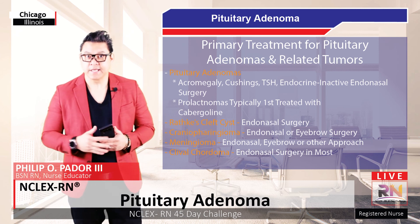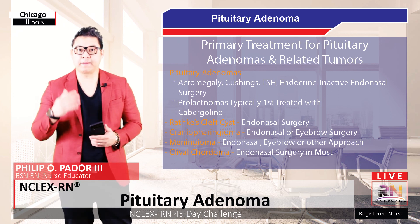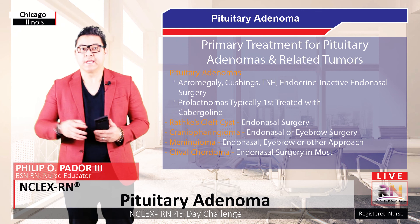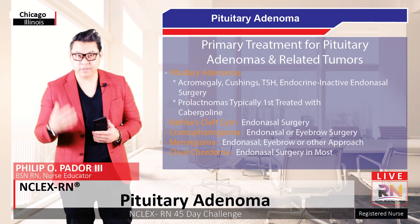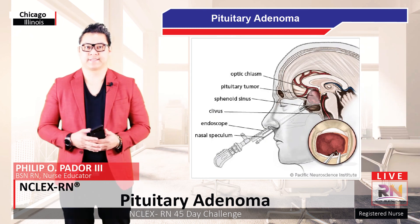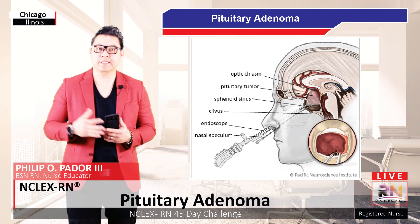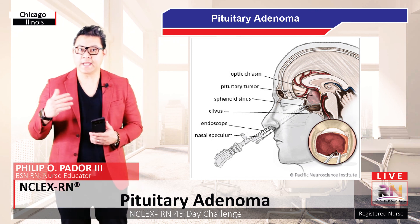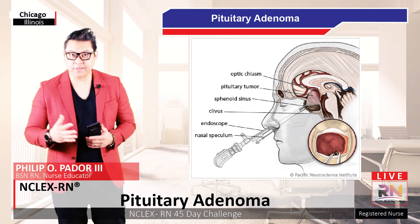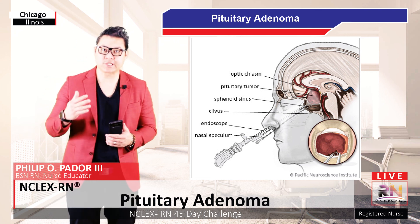Craniopharyngiomas are typically approached with endonasal endoscopic surgery, although in some instances an eyebrow craniotomy may be appropriate. Parasellar meningiomas can be approached by endonasal, eyebrow, or traditional routes, and clival chordomas are typically treated via an endonasal endoscopic approach. This technique has been greatly enhanced over the last decades by improvements in instrumentation and high-definition endoscopy, and is now the preferred method for the removal of the great majority of pituitary and related skull-base tumors.